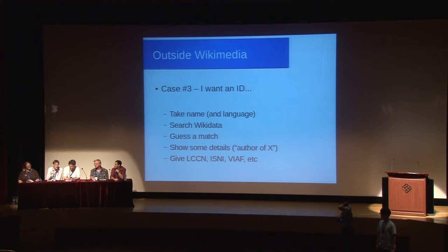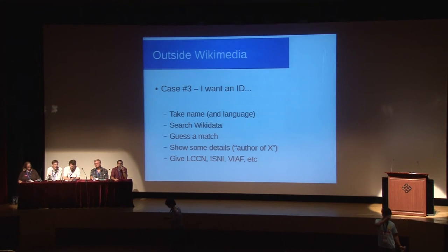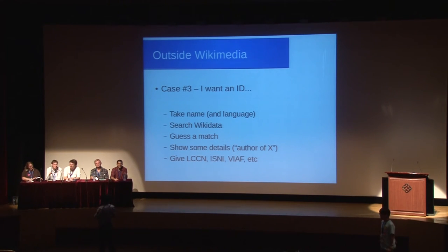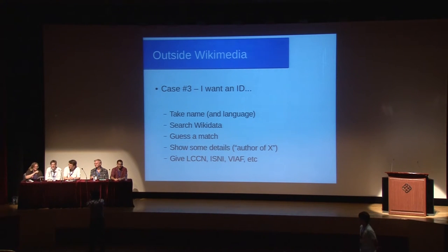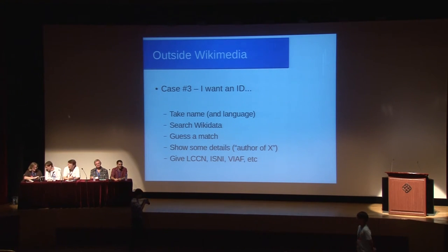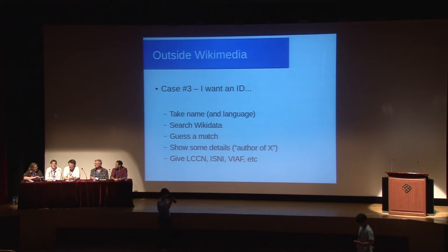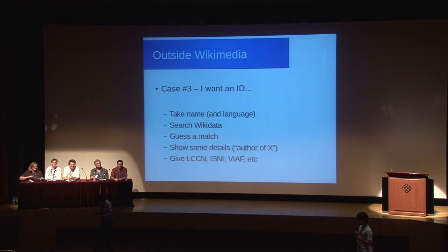To answer the first question about GND type person: one problem is that a lot of entities that aren't people have GND type person set. I just checked and the entry for Zeus says 'is a person.' You wouldn't want to count Zeus in your list of people. Zeus also has many children in Wikidata — Ares, Aphrodite, Apollo — all listed as children, and a cohabitant who is Hera, with a GND identifier and articles in many languages.